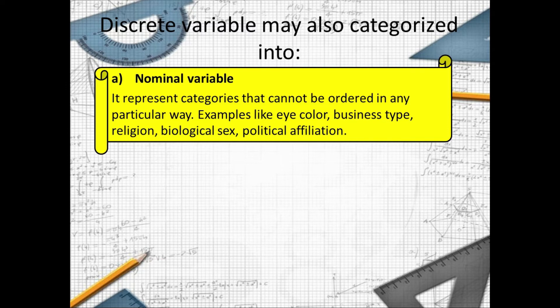Examples like eye color, business type, religion, biological sex, and political affiliation.